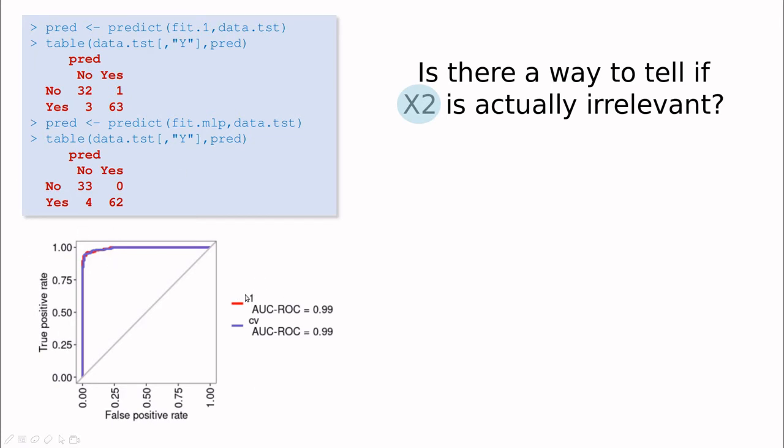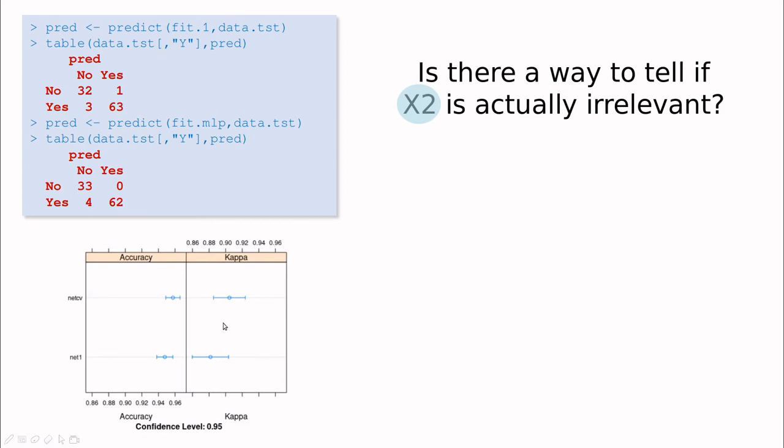And this is the comparison between the logistic regression and that neural network that we train using that fake variable. And actually you could have the bad impression that maybe having more neurons and having x2 is better than the simple model with logistic regression. This is completely false.